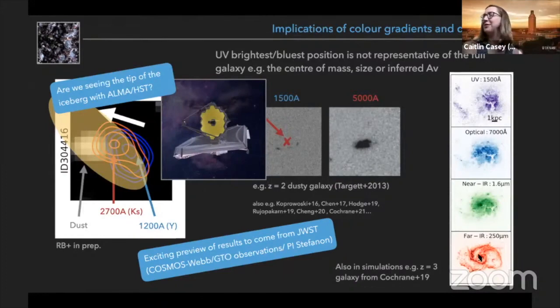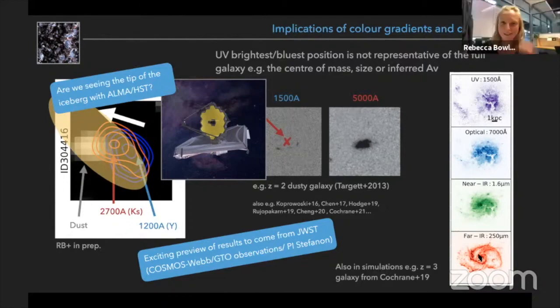So we have another question. Any thoughts, from Justin, any thoughts on how the differential distribution of dust might influence some of the SED fitting assumptions that we all usually make, particularly in using energy balance codes like UV plus IR?